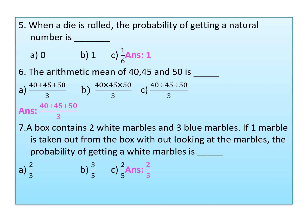Let us continue. Choose the correct answer, number 5: When a die is rolled, the probability of getting a natural number is dash. Natural number means a counting number. Option 0 is not a counting number. Option 1 is a counting number. Option 1 upon 6 is a fraction, not a counting number. So the answer will be 1.